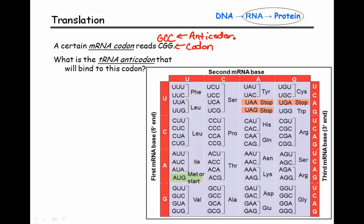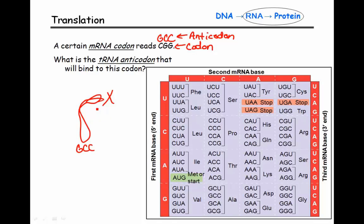Now if we wanted to know for this tRNA — with anticodon GCC — what amino acid is on the other end, which one would we look up on the genetic code table? It's important to understand that we're not looking up GCC. We always look up the codon. So we look for CGG, and when we find CGG, that tells us that arginine, or ARG, is the amino acid attached to the other side of this tRNA. Make sure you understand the difference between the codon and the anticodon, and which one you use to figure out the amino acid.